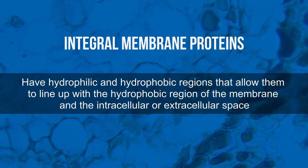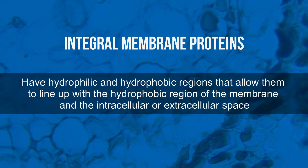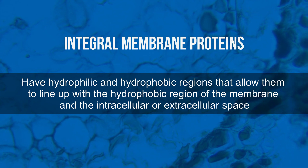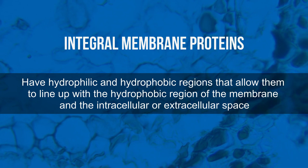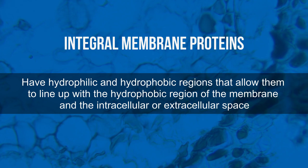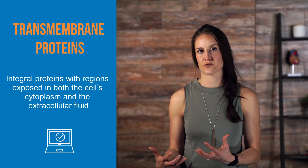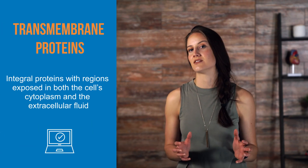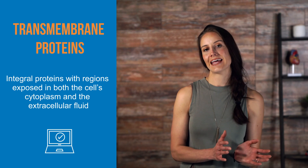Peripheral proteins are temporarily bound to the membrane by hydrogen bonding or other weak non-covalent interactions, and often serve as enzymes or receptor proteins. Integral membrane proteins are those which have hydrophilic and hydrophobic regions that allow them to line up with the hydrophobic region of the membrane and the intracellular or extracellular space. Transmembrane proteins are integral proteins that have regions exposed in both the cell's cytoplasm and the extracellular fluid. These integral proteins can drift in the plane of the membrane, but some are stationary.